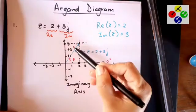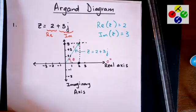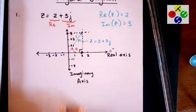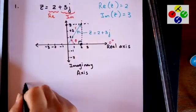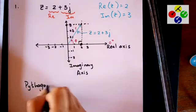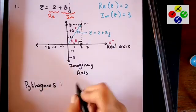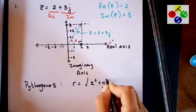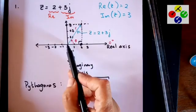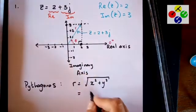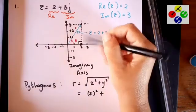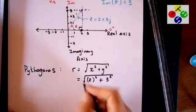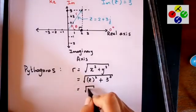So we need to find R and we need to find theta. Because this is a right-angled triangle, we can use Pythagoras. So Pythagoras says that R is going to be the square root of x squared plus y squared. So in this case here, your x is going to be 2 and your y is going to be 3. And you end up with the square root of 13.